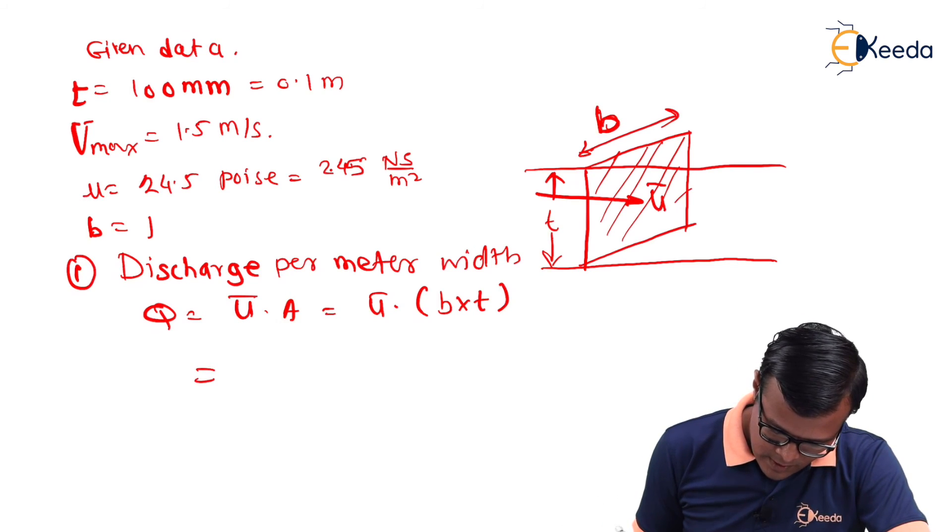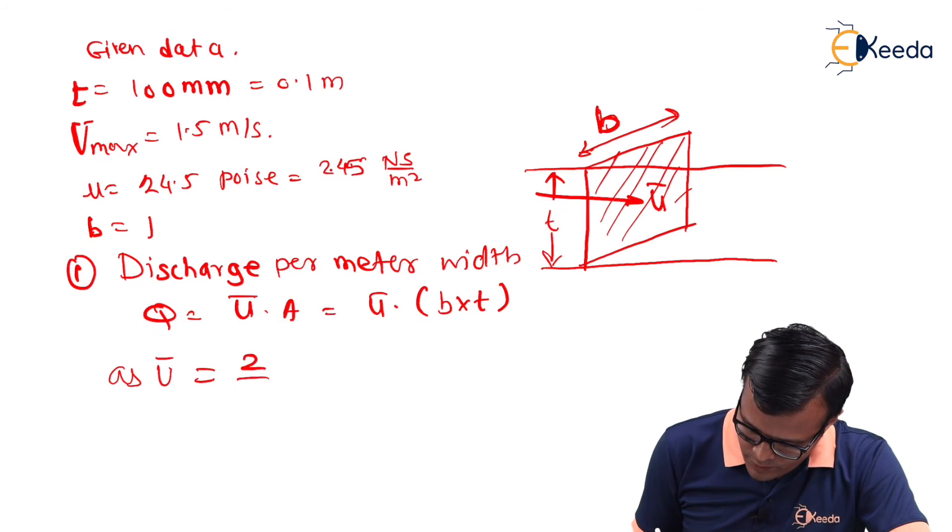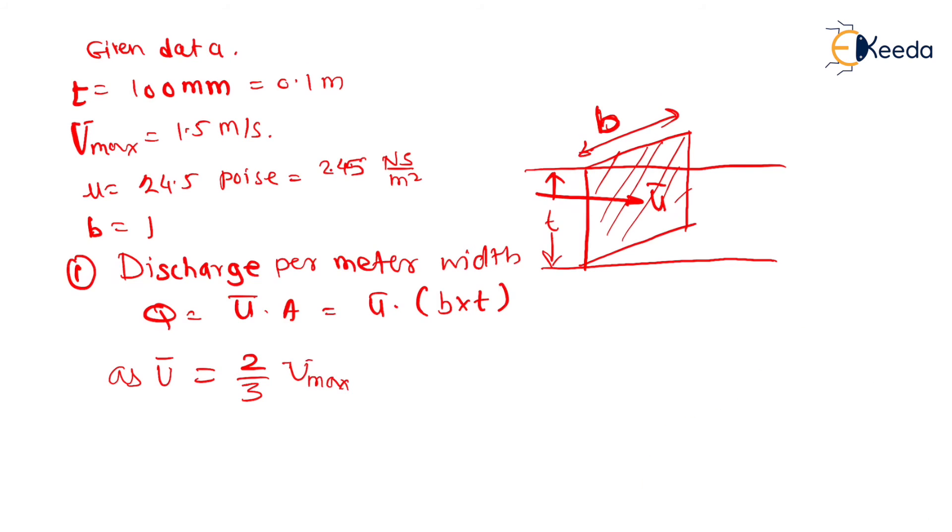So, putting corresponding values. We have this ū can be expressed in terms of as this ū is equal to 2/3 of u_max. Which is 2/3 of 1.5 equal to 1 meter per second.